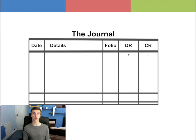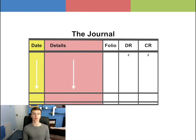Let's now have a look at the layout of the journal. The journal is normally drawn into five columns. Starting from the first column to the left is the date of the transaction. Next is the details column. It is used to record the name of the accounts which need to be debited and credited to complete the double entry of the transaction.